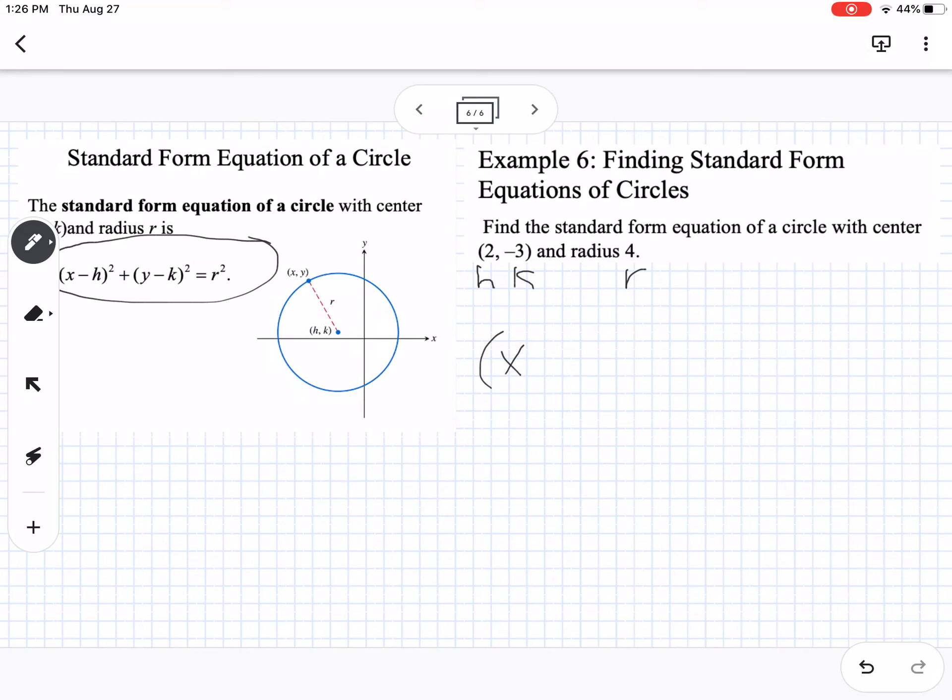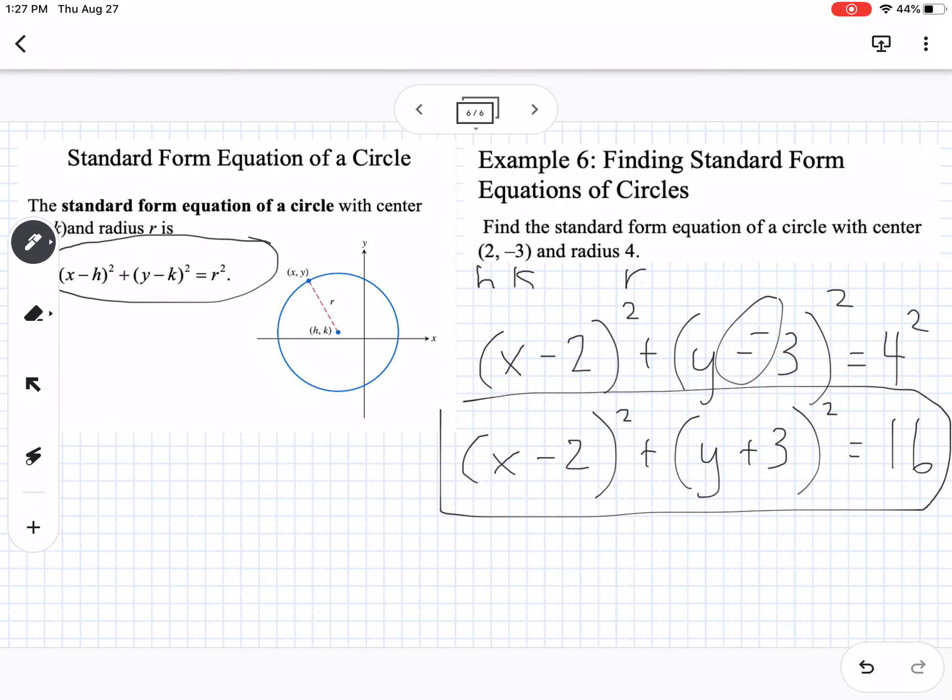So this would be x minus two squared plus y minus negative three squared equals four squared. So now we can simplify this one last little step here. We can say x minus two squared, plus we know if we have minus a negative, that's going to turn into plus. So y plus three squared equals 16. So that right there is our equation of the circle.